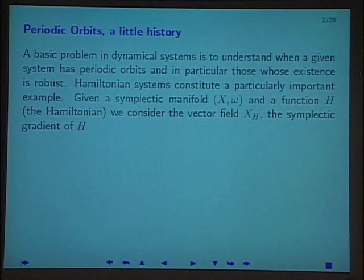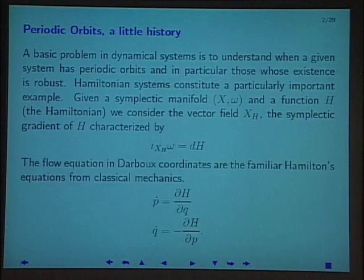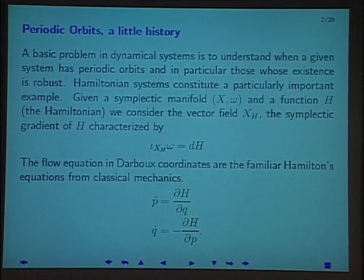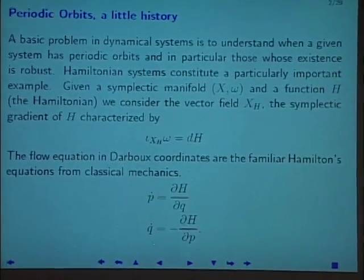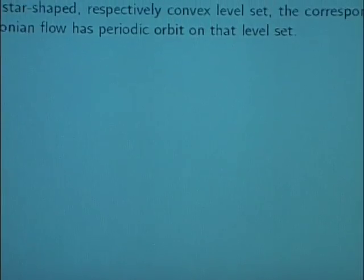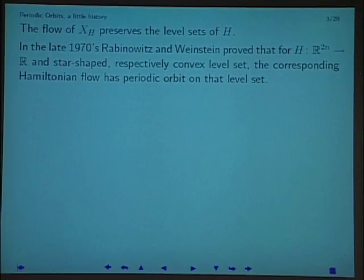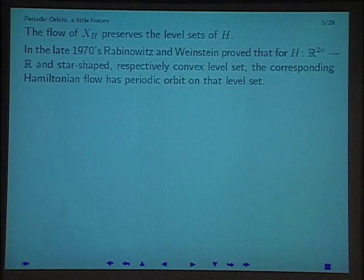I want to motivate where the Weinstein conjecture comes from. On a symplectic manifold, given a function, there's a preferred vector field — the Hamiltonian vector field — and its flow in local coordinates is the usual Hamilton equations. The flow of a Hamiltonian vector field preserves the level sets of the Hamiltonian.